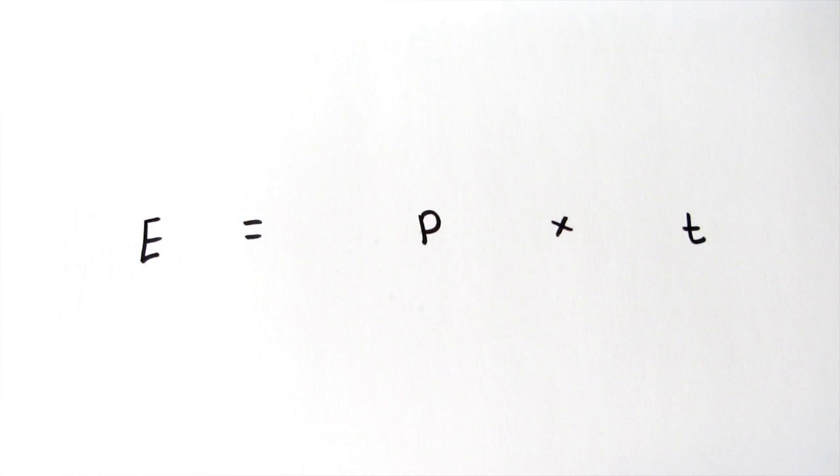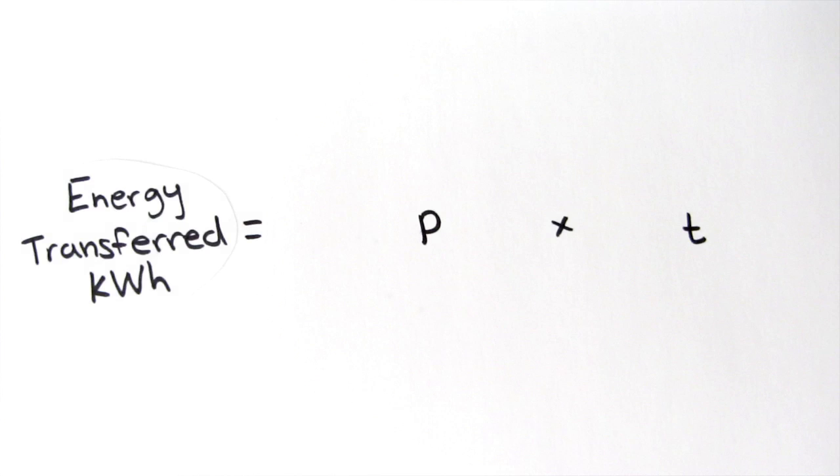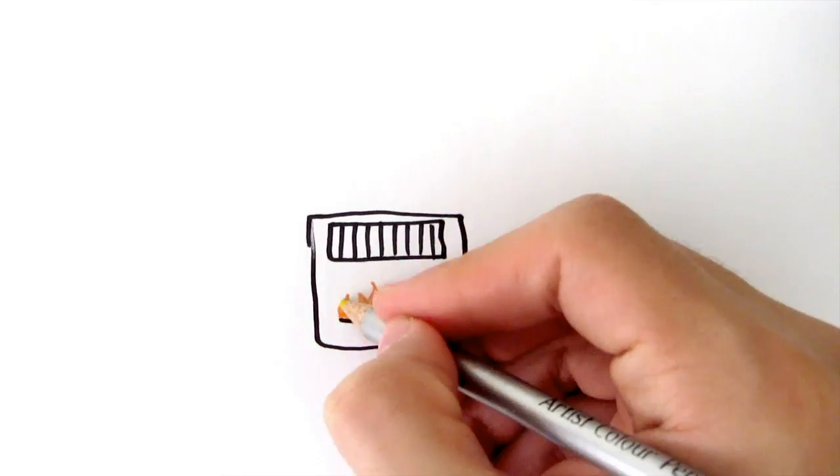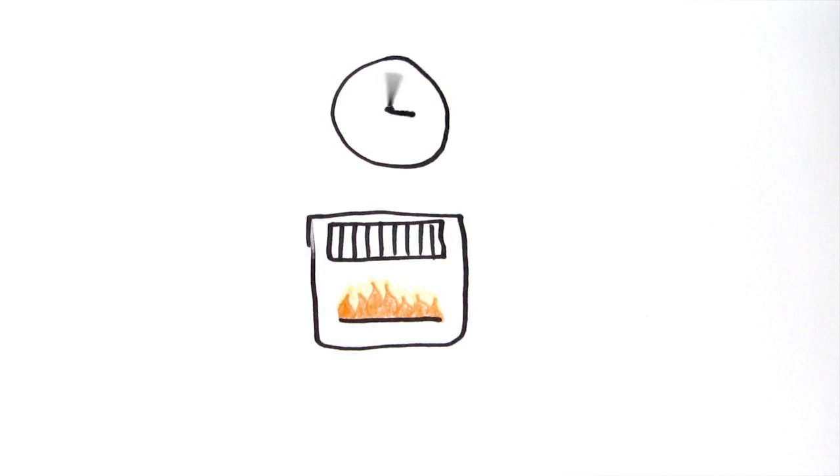The formula used to calculate this is E equals P times T, where E is the energy transferred in kilowatt hours, P is the power in kilowatts, and T is the time in hours. For example, a 2 kilowatt electrical fire is switched on for 5 hours. It uses 10 kilowatt hours of electrical energy.